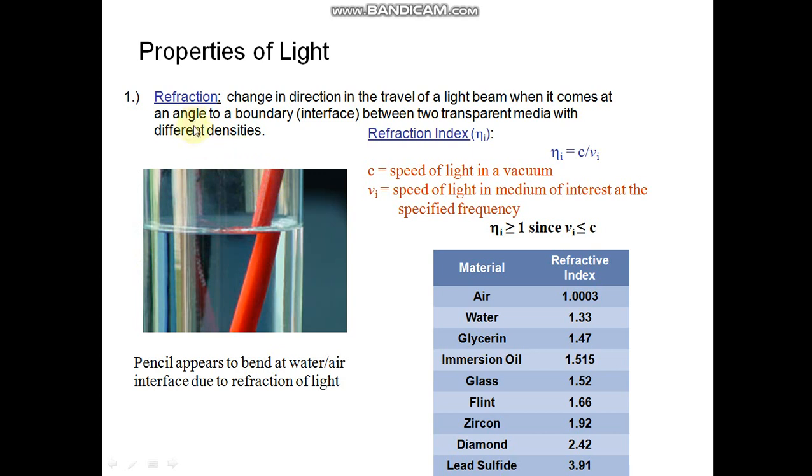Properties of light. Refraction: Change in direction in the travel of light beam when it comes at an angle to a boundary interface between two transparent mediums with different densities. See here, pencil appears to bend at water-air interface due to refraction of light.